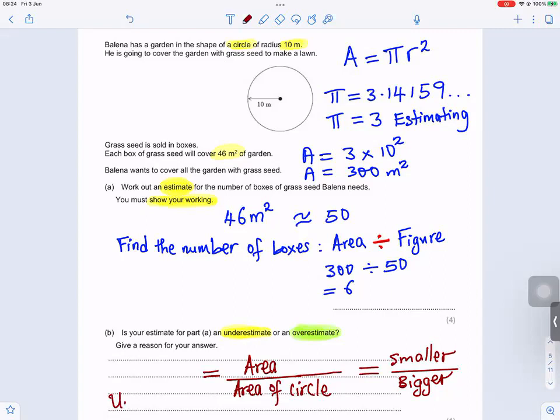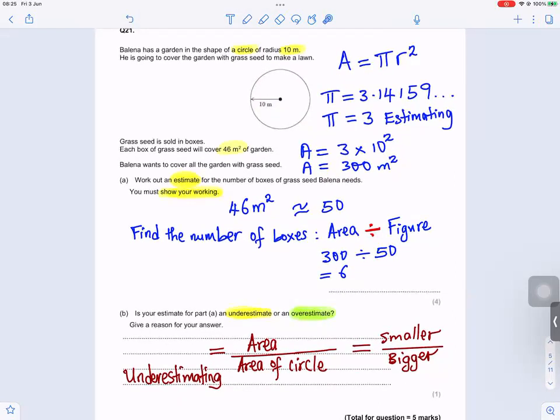So we will put underestimating. So that's what you will choose. And because we estimated, the reason is we estimated pi to be 3. So we estimated to a smaller number. So estimated a smaller number for pi. So that's what you see for reason.